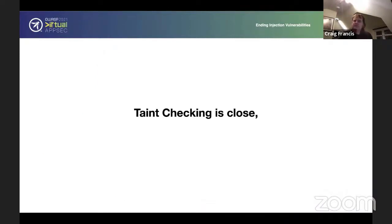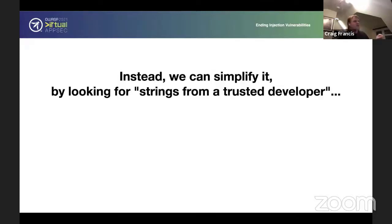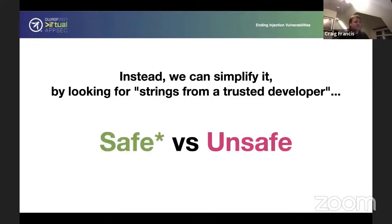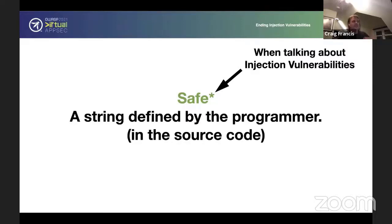So taint checking is close. It's got the right idea. But escaping should be done by a third party library, a library which understands what it's doing. It understands the context in which it works. A database library knows about SQL. HTML templating engine understands about HTML. So instead, we can simplify it by looking for strings from a trusted developer. And don't handle any escaping. Or in short, safe versus unsafe. Safe, when talking about injection vulnerabilities, and that is kind of important, is a string defined by a programmer, as in in the source code. And everything else is considered unsafe.